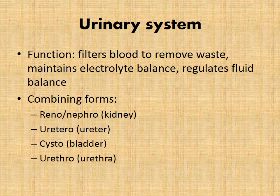Our urinary system filters blood to remove wastes, maintains electrolyte balance, and regulates fluid balance within our body. Combining forms: reno and nephro both refer to the kidney; uretero is for the ureter; cysto for the bladder — we often use that in cystocentesis when we puncture the bladder to remove fluid — and urethra for the urethra.